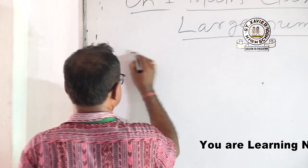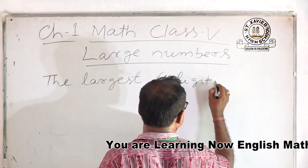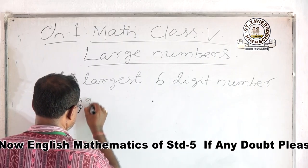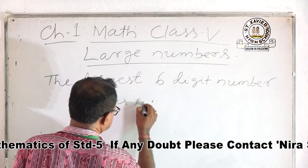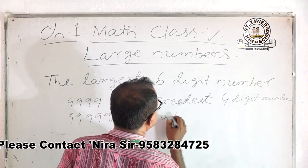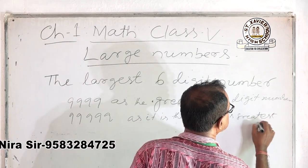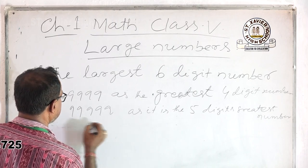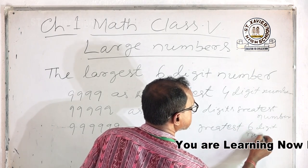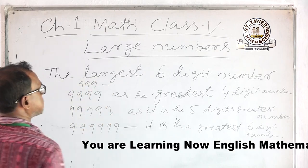We have to learn large numbers of 5, 6, 7, or 8 digits. If we ask you the largest 6-digit number, it is very easy to write because you already know that 9999 is the 4-digit greatest number, and 99999 is the 5-digit greatest number. In the same way, you write one more 9, giving 999999 — that is the greatest 6-digit number.